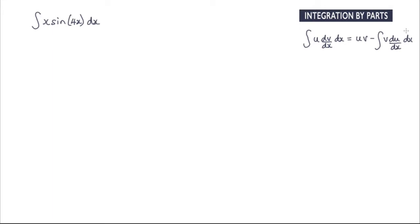Now the first thing I need to do when deciding to use integration by parts is to decide which part will be u and which part will be dv by dx. So which part am I going to differentiate and which am I going to integrate.